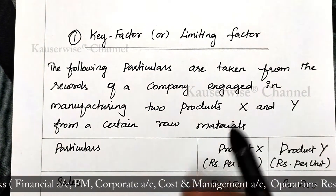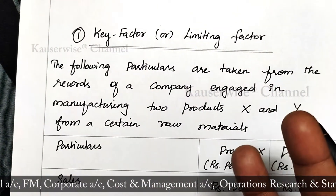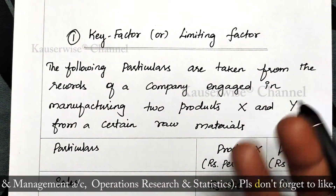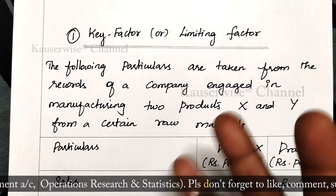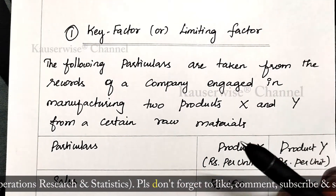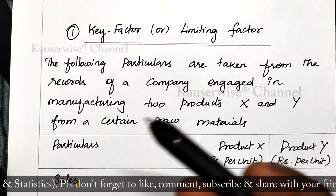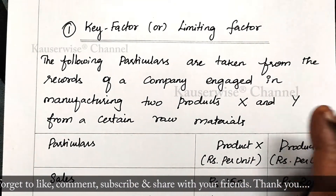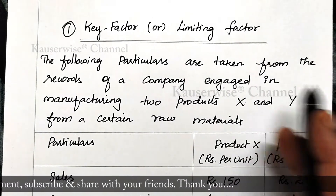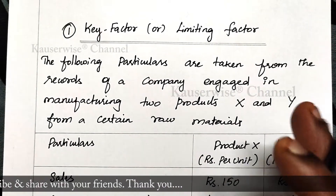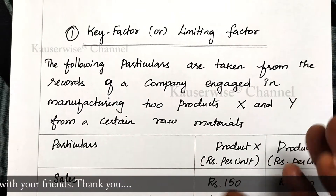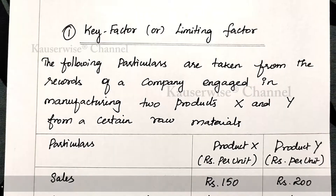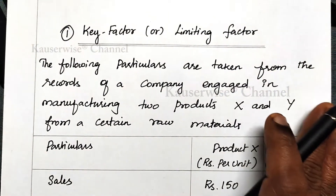For example, sales potential may be limited. Sometimes production capacity may be limited due to limited availability of skilled labor or machine hours, or sometimes raw material may be in short supply. Sometimes finance is also limited. So these are the various possibilities of a limiting factor. In that case, the management will use marginal costing technique to take a decision when there is any limiting factor.